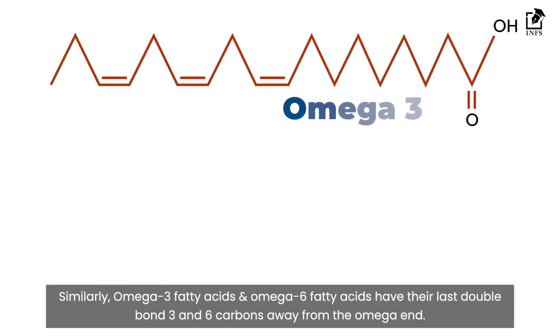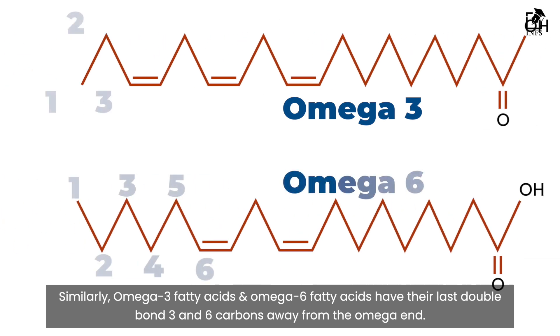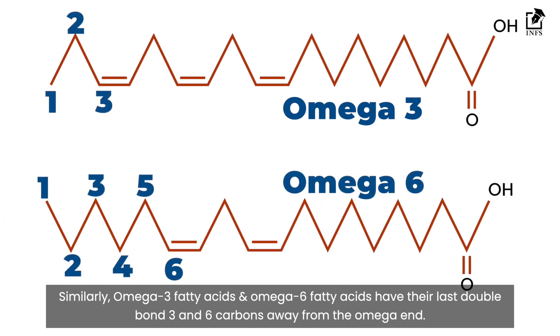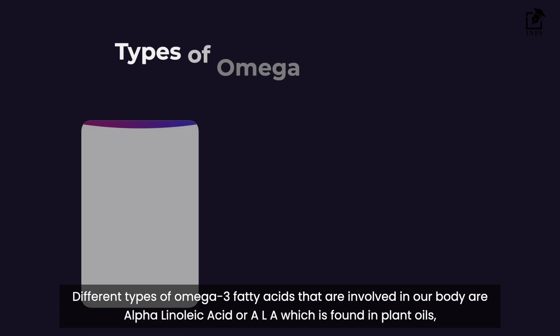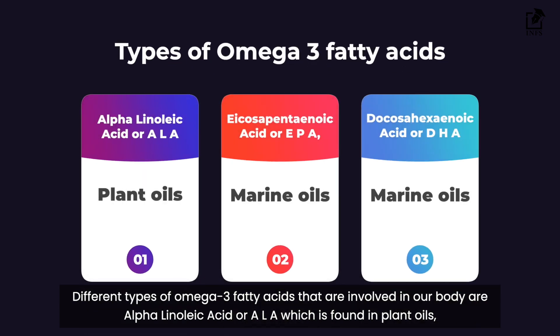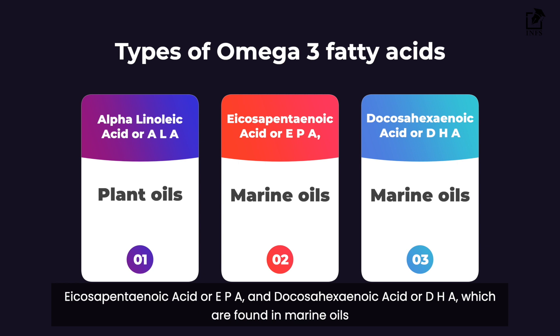Similarly, omega-3 fatty acids and omega-6 fatty acids have their last double bond 3 and 6 carbons away from the omega end. These are polyunsaturated fatty acids. Different types of omega-3 fatty acids involved in our body are Alpha-linolenic acid or ALA, which is found in plant oils, eicosapentaenoic acid or EPA, and docosahexaenoic acid or DHA, which are found in marine oils.